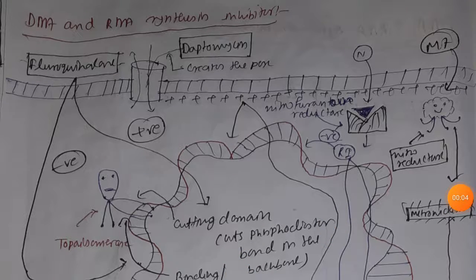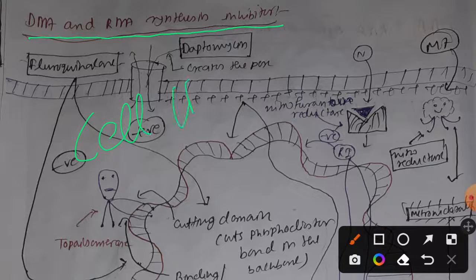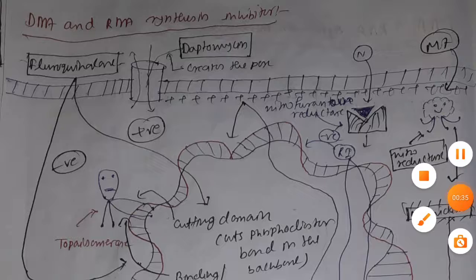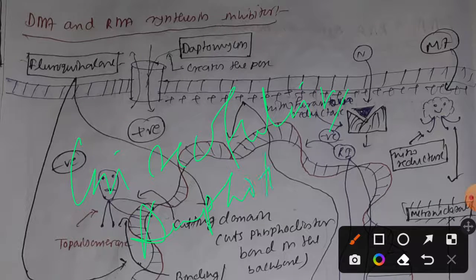In this video we will discuss five modes of action of different antibacterial agents acting on different parts of bacteria. Today we will first discuss DNA synthesis inhibitors and RNA synthesis inhibitors, then cell wall synthesis inhibitors, cell membrane synthesis inhibitors, and protein synthesis inhibitors. After covering antibacterial agents, we will also talk about two antifungal agents: griseofulvin and amphotericin B.